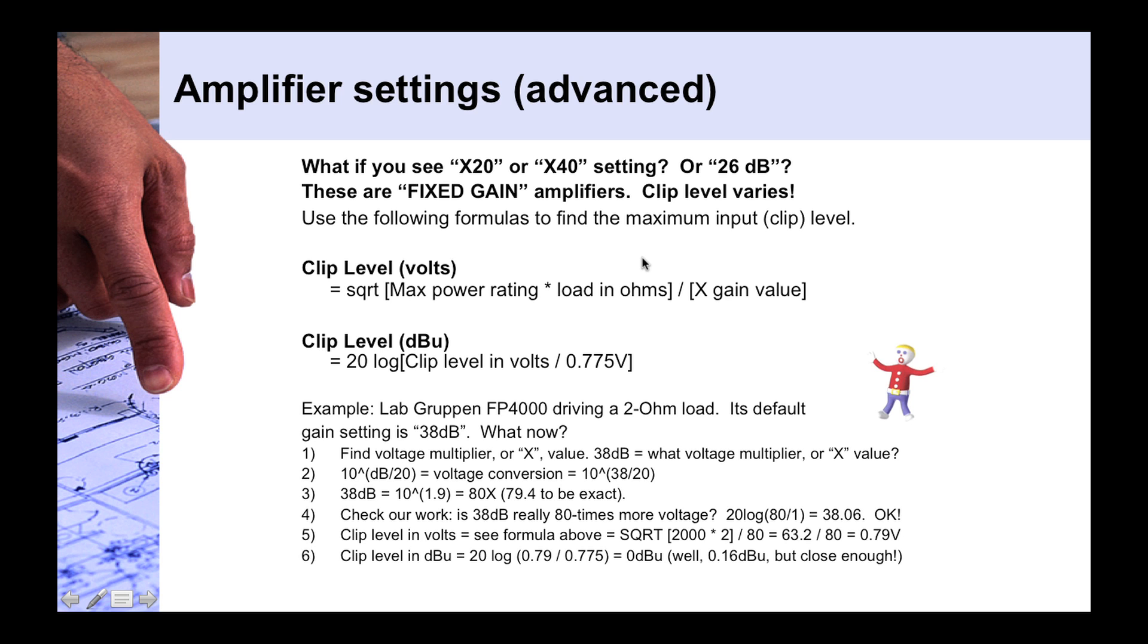So let's take, for example, one of the trickier examples is sometimes you will only see voltage gain in a dB value. For example, a Lab Gruppen FP4000 amplifier driving a 2-ohm load. It says instead of X multipliers of what the voltage gain is, it gives you a voltage gain of dB. Well, in that case, we just come down here, and we have to figure out what the voltage gain is. Like, how many times is it multiplying the voltage? Well, in that case, we simply convert dBs back to voltages.